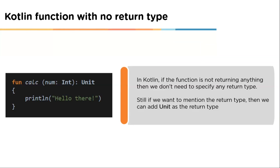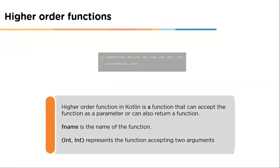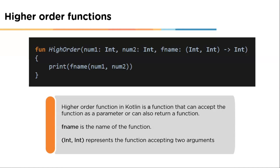Moving on to Kotlin functions with no return type — in Kotlin, if the function is not returning anything, we don't need to specify any return type. But if we want to mention the return type, we can add 'unit' as the return type. The unit type in Kotlin is like the void type in Java, meaning it is used with functions that don't return anything.